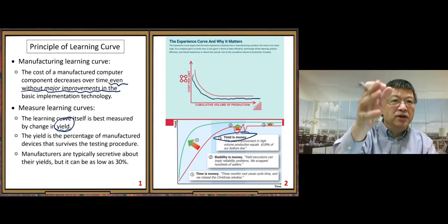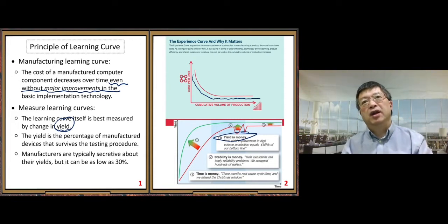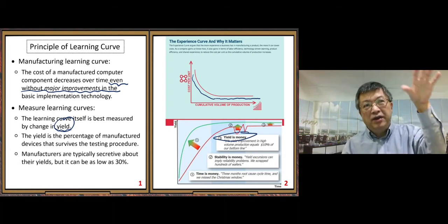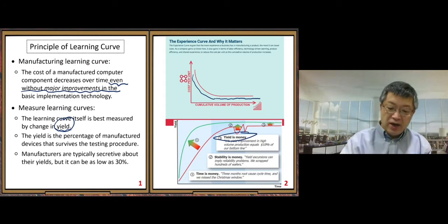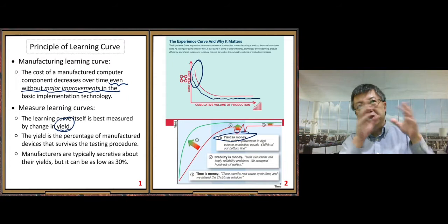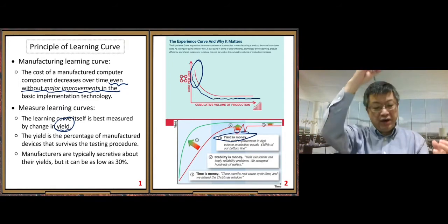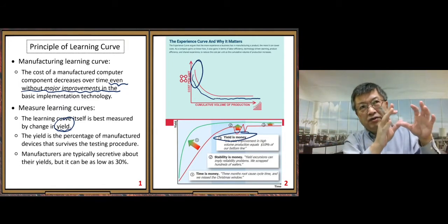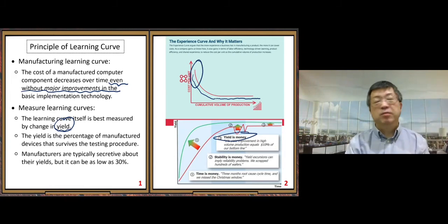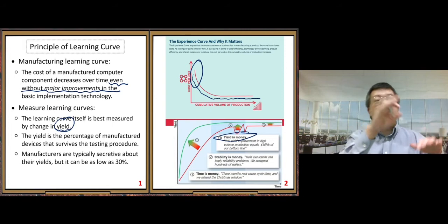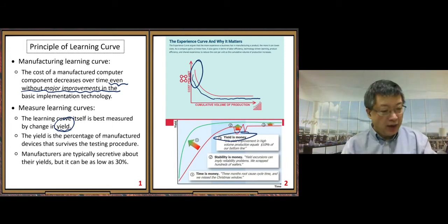Yield can be as low as 30 percent at the beginning, especially when developing new technology. A low yield means the cost is really high. Some other companies could have yields even lower than 30 percent — it's possible.